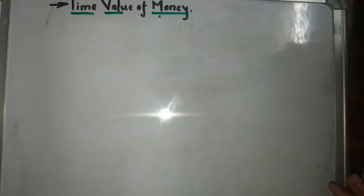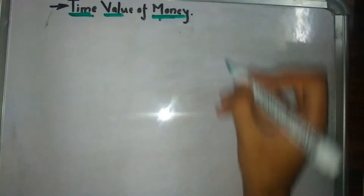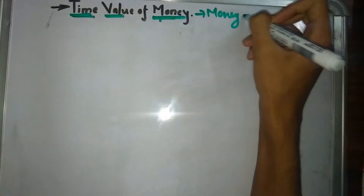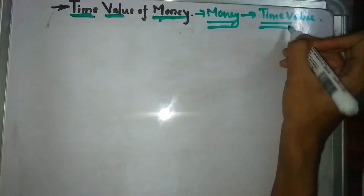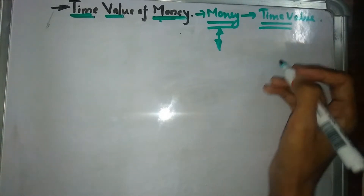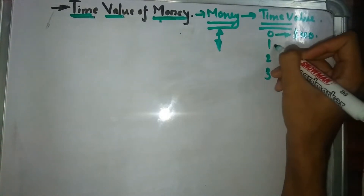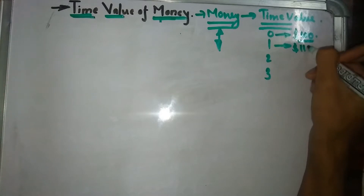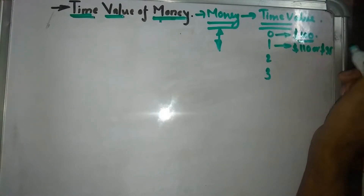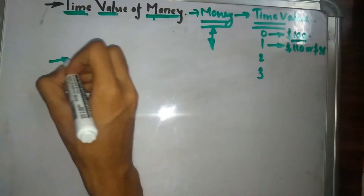First, we'll be talking about the introduction to time value of money — specifically, the relationship between money and time value. We're going to understand whether money increases or decreases with a change in time. For example, right now let's say we have $100. In one year from now, is the value of that $100 going to remain $100, increase to $110, or decrease to $95? We're going to learn whether a certain sum of money increases, decreases, or remains the same with a change in time.